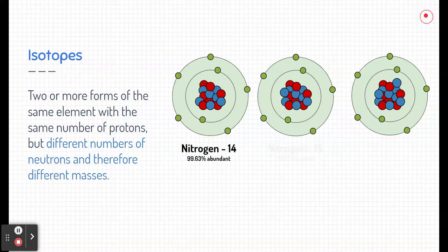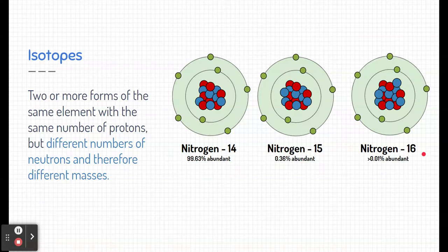This one is nitrogen-14. This one is nitrogen-15 in the middle. And the one on the right is nitrogen-16. Now we'll talk about what those numbers 14, 15, and 16 mean in a moment, but I first want to talk about their abundance. Notice I gave you some percentages down there. What this percentage means is how often we predict that we see it in the universe.